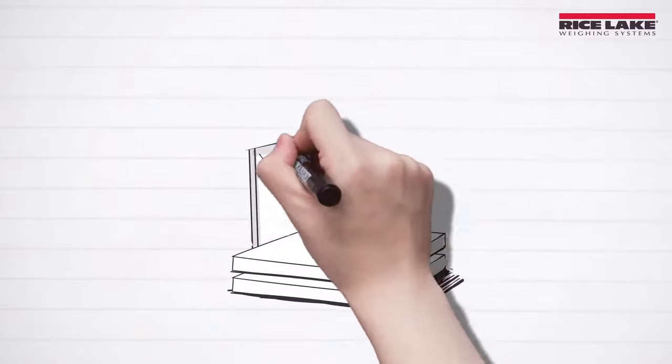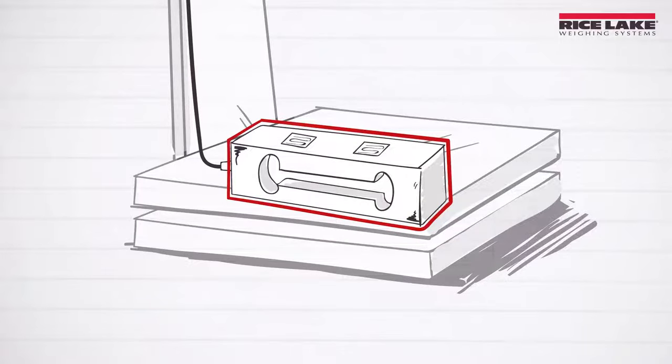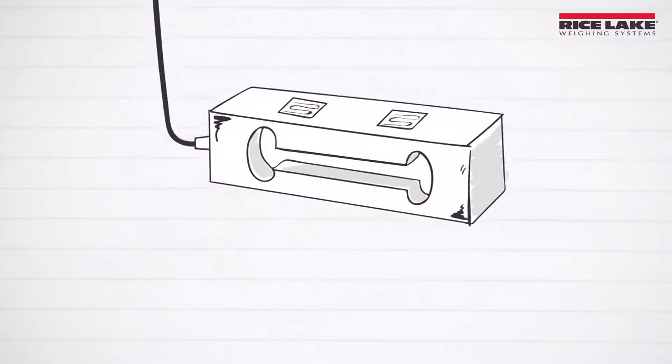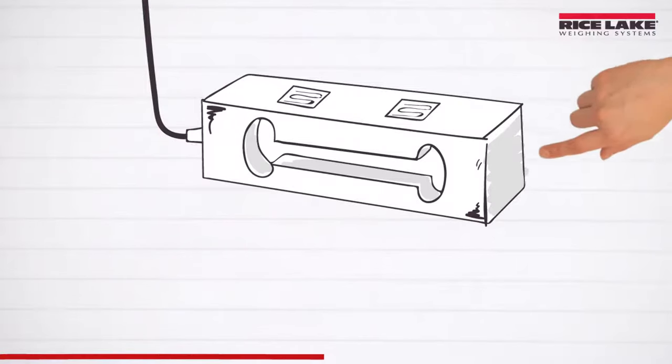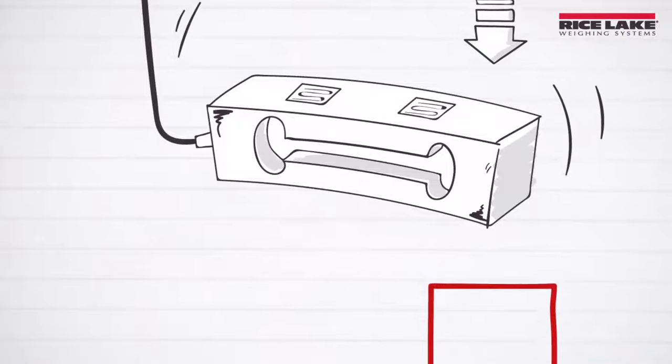Almost all scales rely on devices called load cells to physically measure how much an object weighs. When weight is applied to a scale, the load cell bends slightly, causing an electrical signal running through the load cell to change.